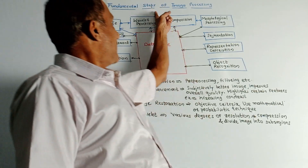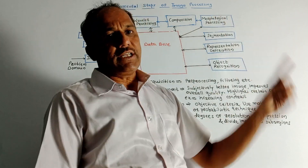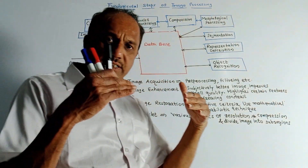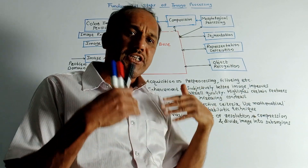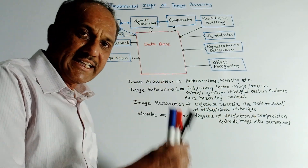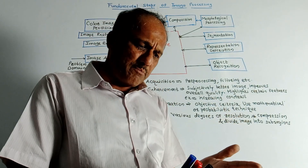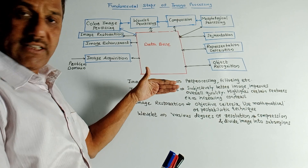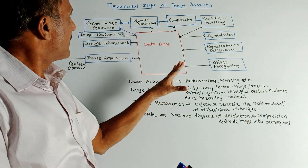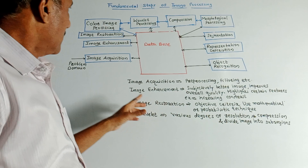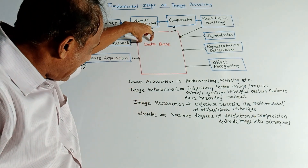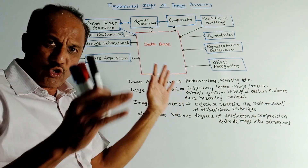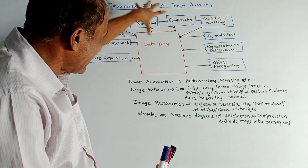The next part is the fundamental steps of digital image processing. This diagram shows the different stages or steps required to process an image digitally. Everything is related to the database of an image, and we will now discuss all the steps in detail.